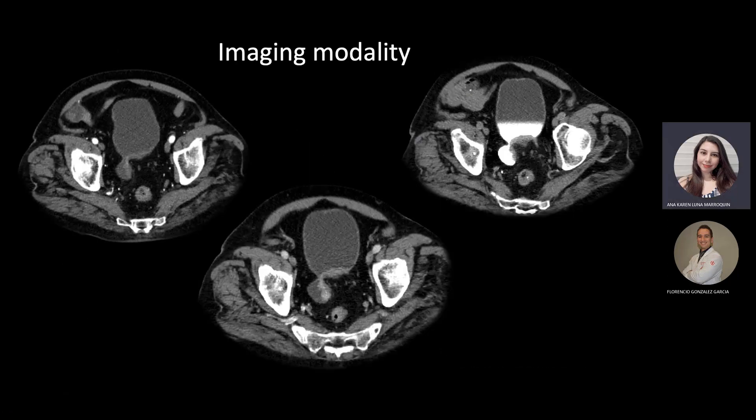Post-contrast images revealed enhancement of the mass from 60 to 70 Hounsfield units and a filling defect in the bladder wall and inner of the diverticulum on the excretory phase.